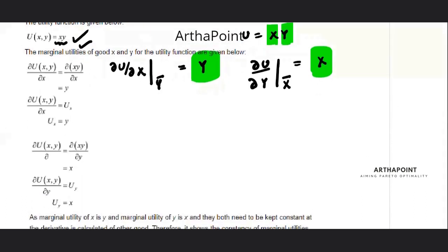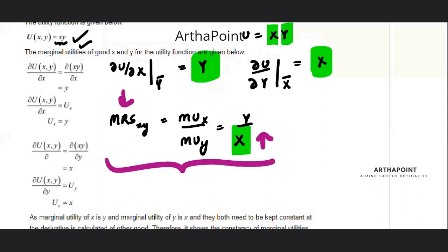Now, if I find MRS, what would be my MRS? It would be MUX by MUY. This is going to be Y by X. Clearly, if you notice, X is coming in the denominator. So if X will increase, MRS will decrease. So this is a diminishing MRS case. This is clear to us that it is a diminishing MRS XY.